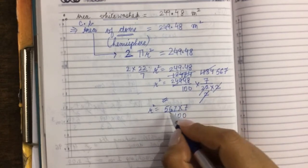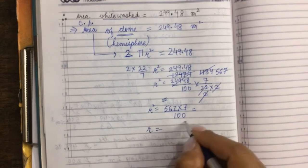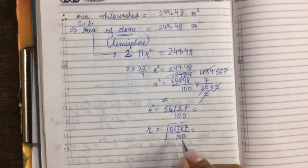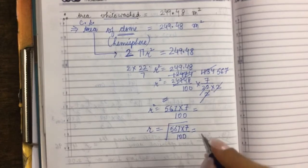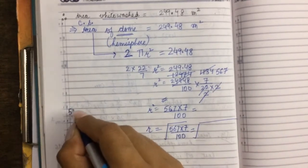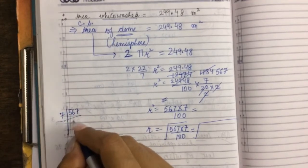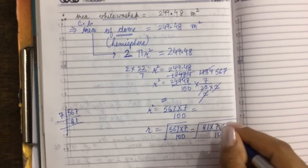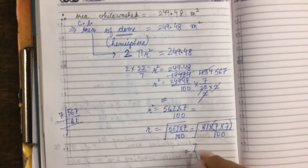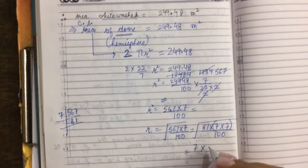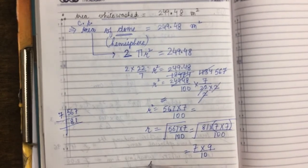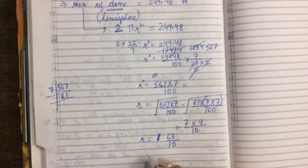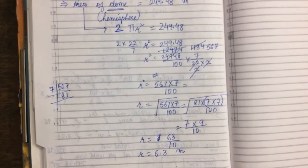Taking the square root: r = √(567 × 7 / 100). Factorizing 567 gives 81 × 7, so we have √(81 × 7 × 7 / 100). The pair of 7s and 81 come out of the root: r = (9 × 7)/10 = 63/10 = 6.3 meters.